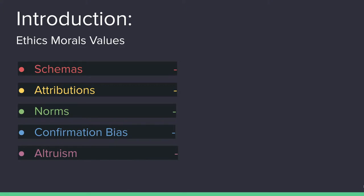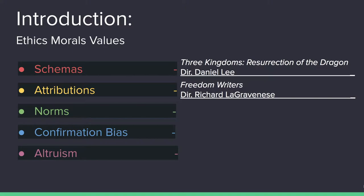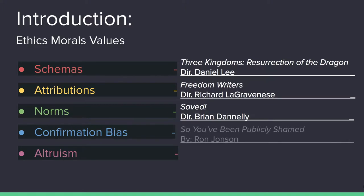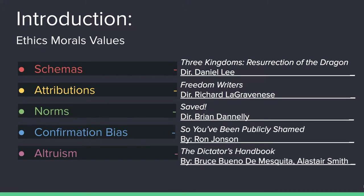Examples will be shown through three films and two books. The films include Daniel Lee's Three Kingdoms: Resurrection of the Dragon, Richard LaGravinesse's Freedom Writers, and Brian Dinelli's Saved. The books include Jon Ronson's So You've Been Publicly Shamed, and Bruce Bueno de Mesquita and Alastair Smith's The Dictator's Handbook. Each one of these media sources holds implicit examples of how ethics, morals, and values fit into each source's main subject, demonstrating the impact of how each individual's ethics, morals, and values affect the social world.